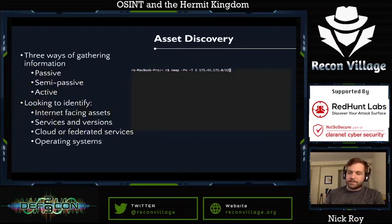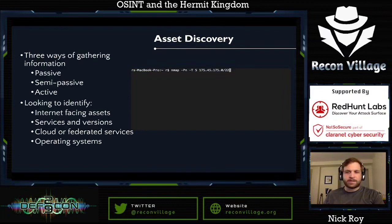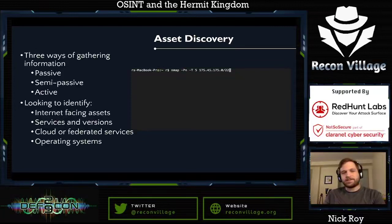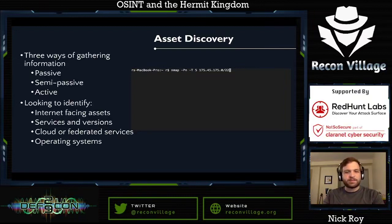Let's start to gather some information. There are a couple of ways to gather this data. Today we're going to focus on passive and semi-passive. Passive is anything we can find online. Semi-passive is where I might go out and use a third-party website to scan a target for me, keeping that site between myself and whatever I'm researching. We really want to avoid active — I don't want to just run an Nmap scan. I want to rely on what's publicly available. Today we want to identify what's on the North Korean IP space, define that IP space, find what services and operating systems are running, and branch out from there.